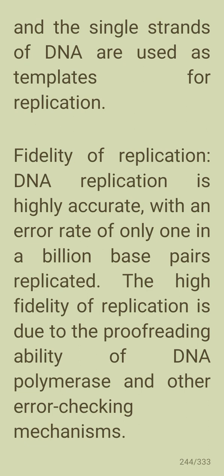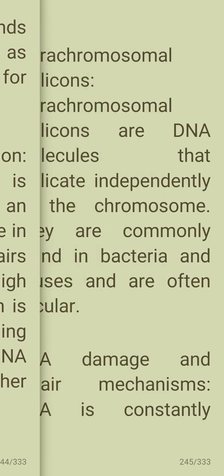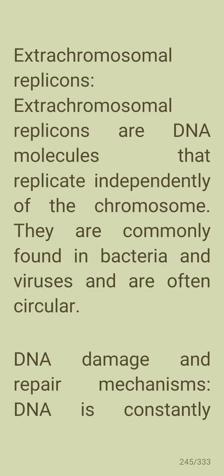DNA replication is highly accurate, with an error rate of only 1 in a billion base pairs replicated. This high fidelity is due to the proofreading ability of DNA polymerase and error-checking mechanisms. Extrachromosomal replicants are DNA molecules that replicate independently of the chromosome; they are commonly found in bacteria and viruses and are often circular.